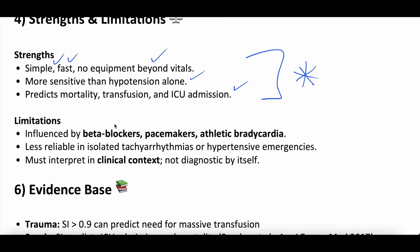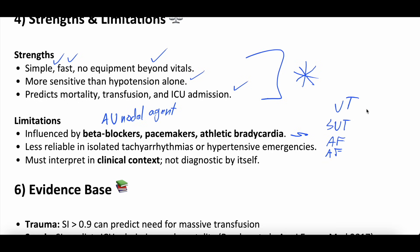Limitations: this is influenced by patients on AV nodal blocking agents — beta blockers, calcium channel blockers — because their heart rate will be artificially lower. So it won't be accurate in that population, or for pacemaker-dependent patients, or patients with baseline bradycardia. Don't be falsely reassured if someone is on home metoprolol and their shock index looks great. It can also be less reliable in tachyarrhythmias — AFib with RVR, AFlutter, SVT, VT — because these are not native sinus tachycardia. And obviously use this in clinical context: it is not diagnostic by itself.